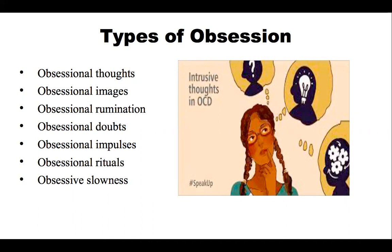Obsessional impulses are urges to perform an act, usually of a violent or embarrassing kind, such as injuring a child in public. Obsessional rituals can take the form of mental or physical activities — for example, counting repeatedly in a special way, repeating certain words, or behavioral forms like washing hands 20 or more times a day. Obsessive slowness refers to marked slowness in everyday daily activities.